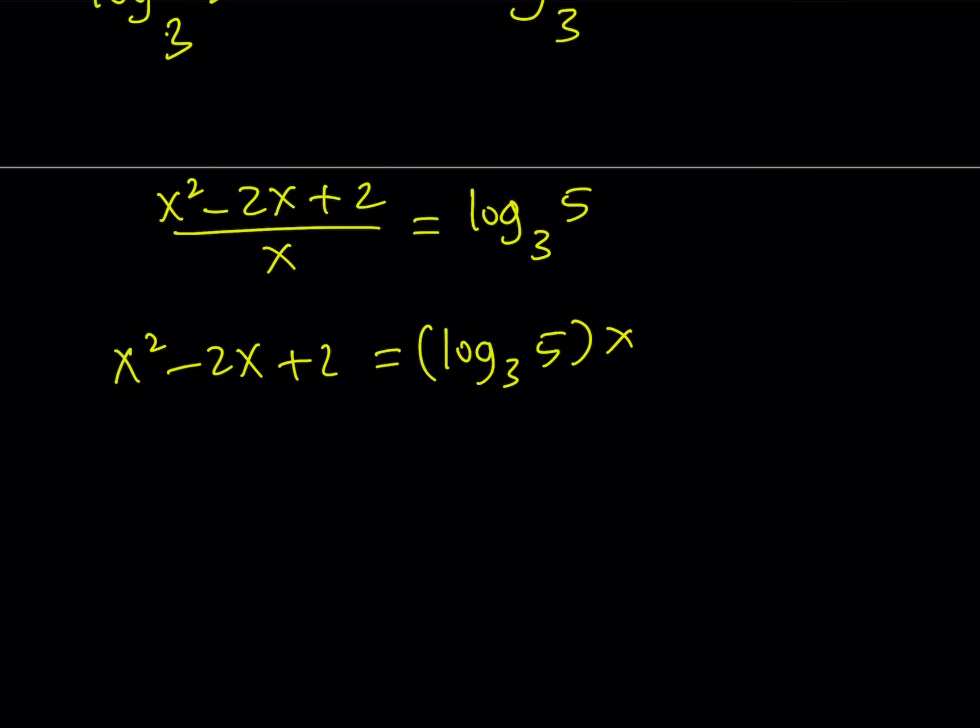Okay. Let's go ahead and cross multiply. And then let's put everything on the same side and put it together. So the coefficient of x is going to be this one. And now we do get a quadratic equation.